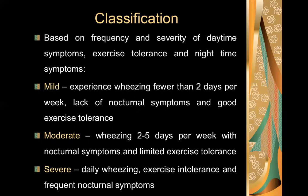Asthma is classified based on the frequency and severity of daytime symptoms, exercise tolerance, and nighttime symptoms into mild, moderate, and severe. In mild asthma, the patient experiences wheezing fewer than two days per week with no nocturnal symptoms and good exercise tolerance. Wheezing two to five days per week with nighttime symptoms and limited exercise tolerance indicates moderate asthma. Daily wheezing, exercise intolerance, and frequent nocturnal symptoms are signs of severe asthma.